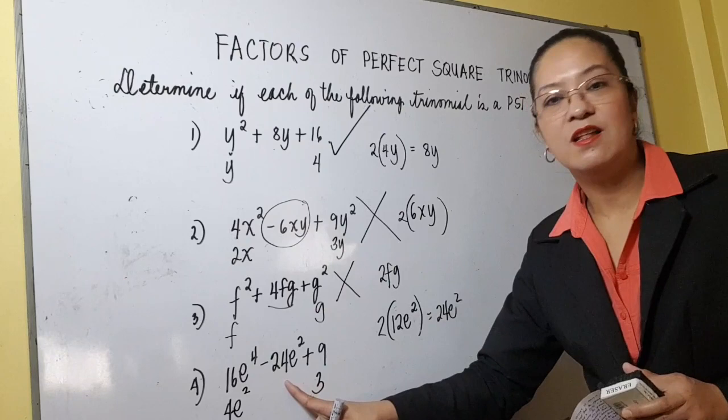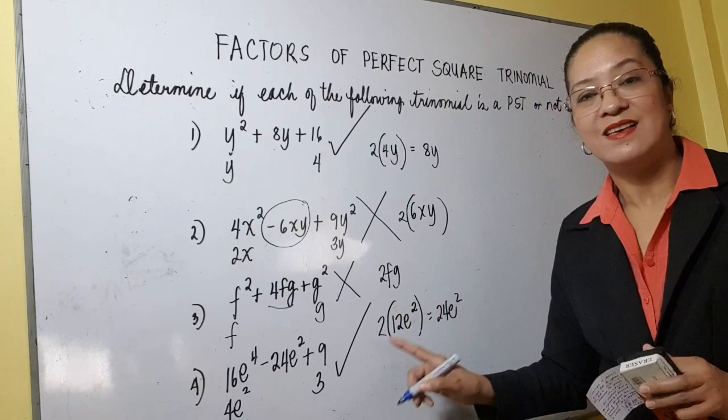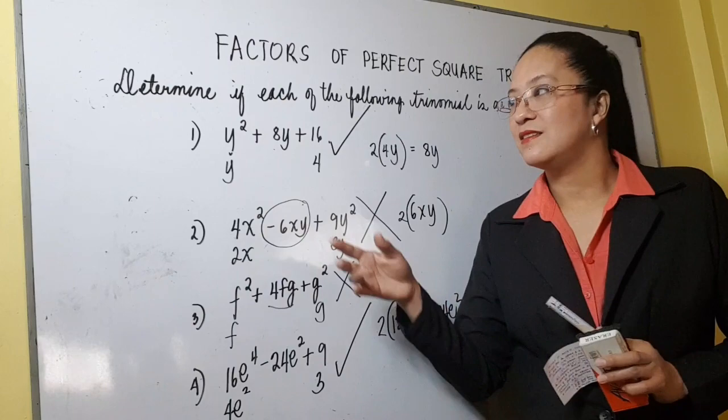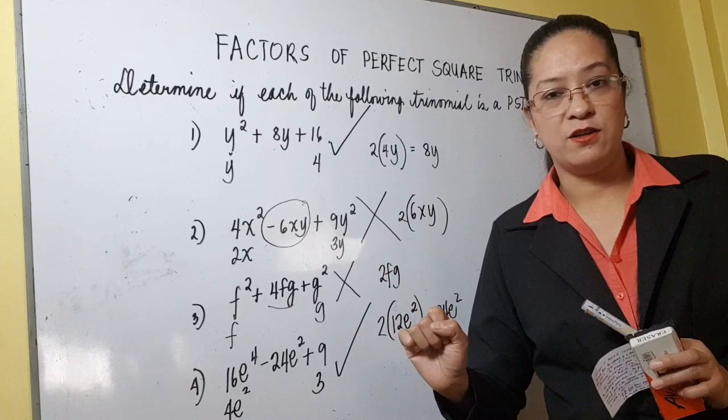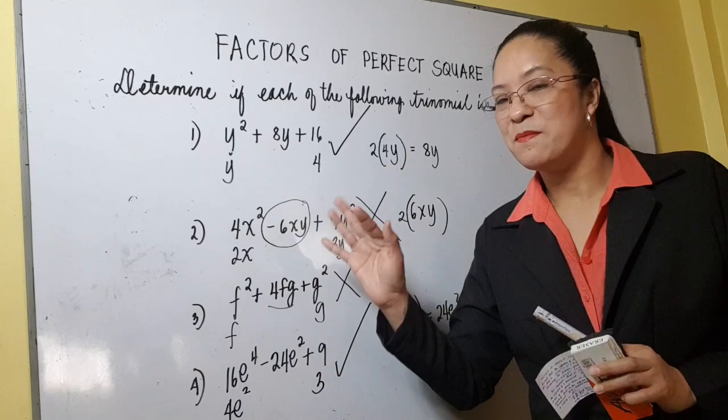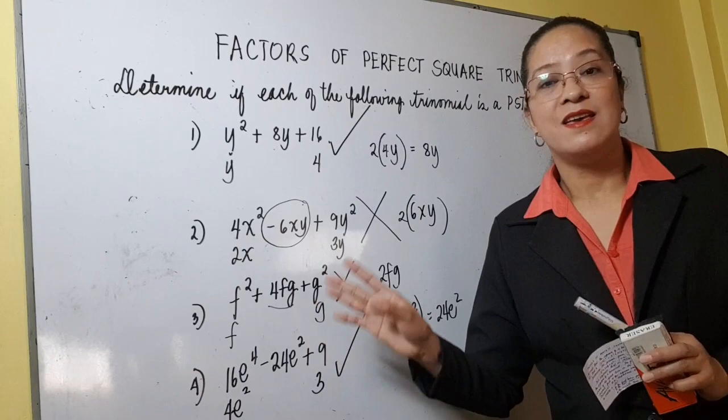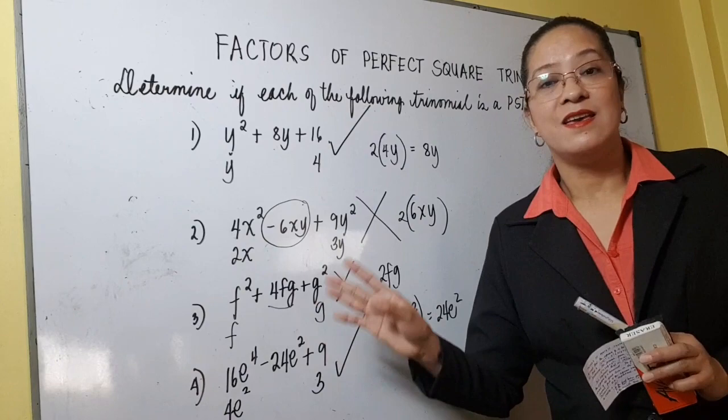Bakit tayo nag-drill sa identifying whether a given polynomial is a perfect square trinomial? Kasi nga, kailangan mo munang ma-identify na siya ay perfect square trinomial para masabi mo na ang factors ay square of a binomial. So let's try to factor each of the given trinomials.